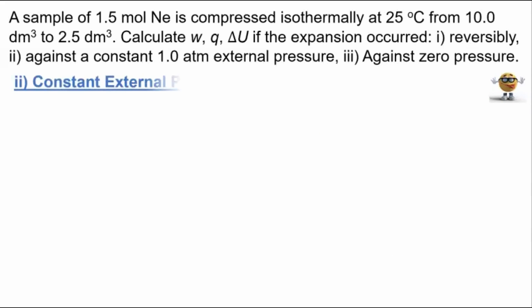Cool beans. For the next part of the problem, we want to solve for these values under constant external pressure. We're going to use the same equation for work in differential form as before. At this point, we know that the external pressure is constant, so we can yank it out of the integral, just like this. All we have is the integral of dV, which is V, so work equals negative P external times the change in volume, as we go from V final to V initial.